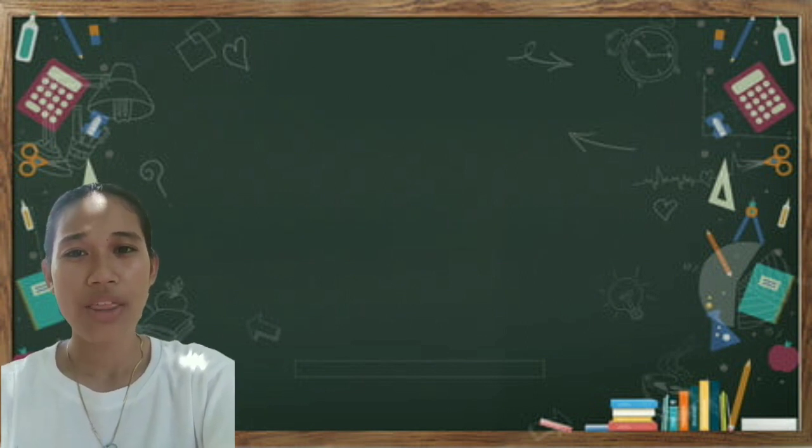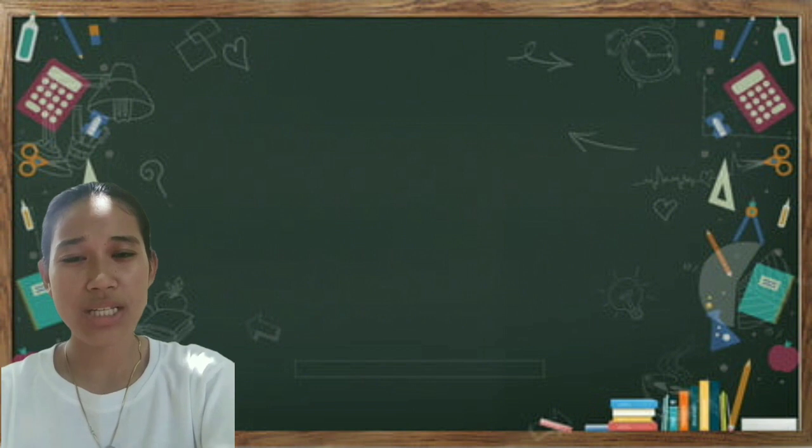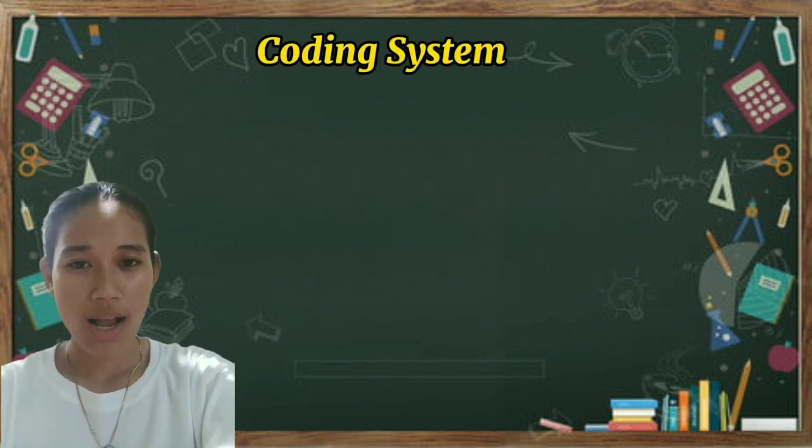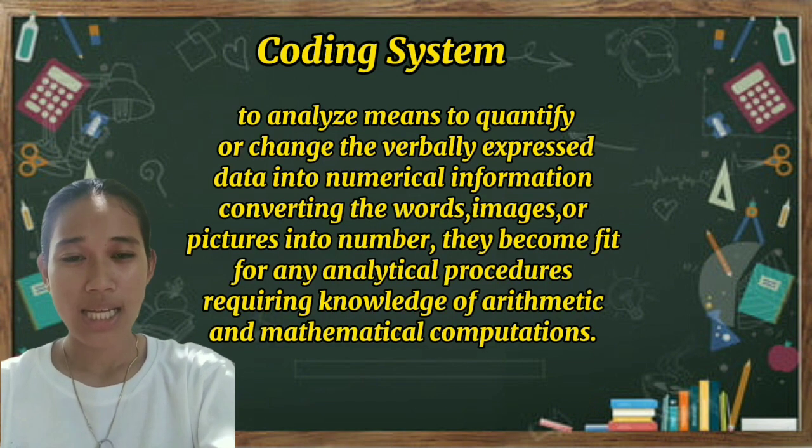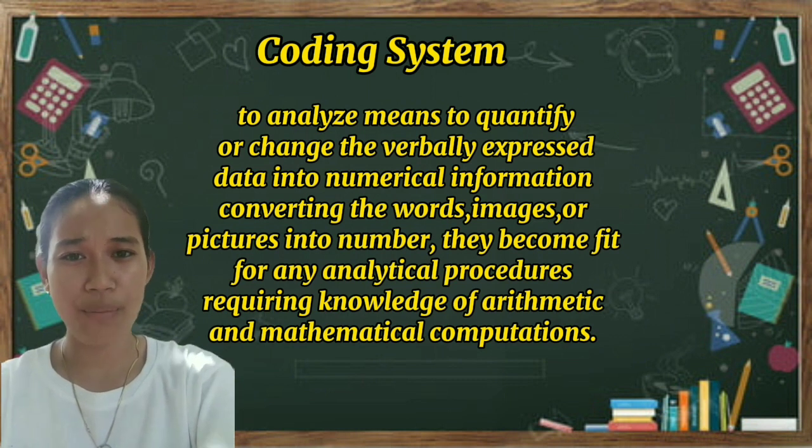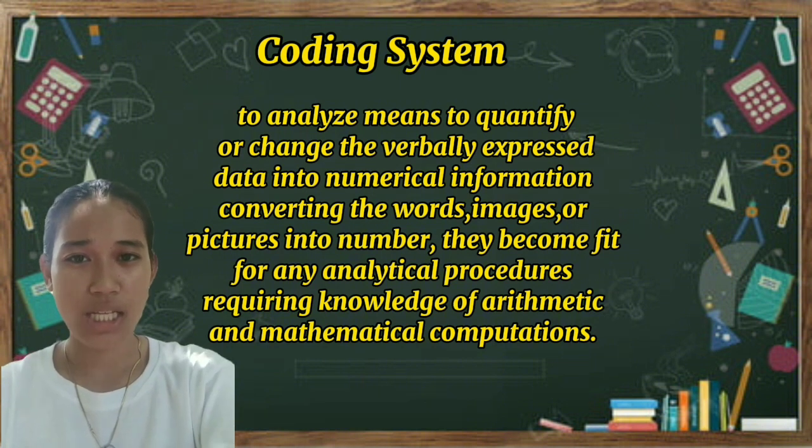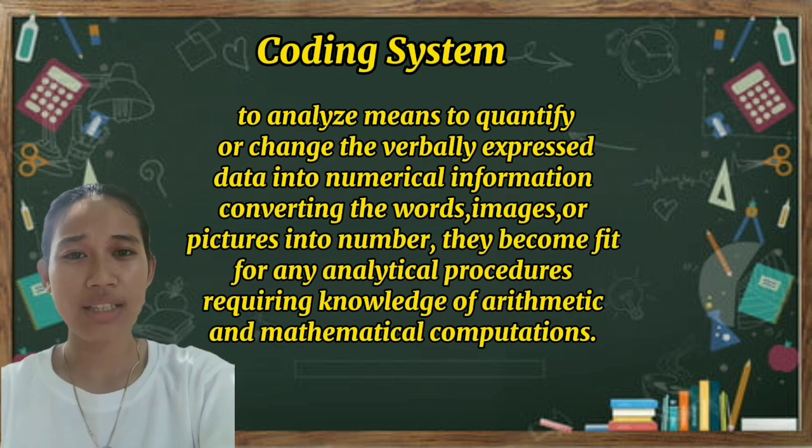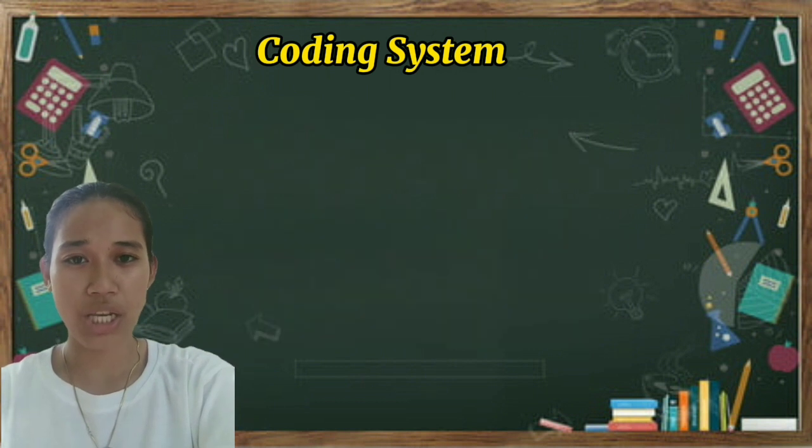Okay, now let me explain more. The first one, which is the coding system. Coding system is to analyze means to quantify or change the verbally expressed data into numerical information, converting the words, images, or pictures into numbers. They become fit for any analytical procedures requiring knowledge of arithmetic and mathematical computation.